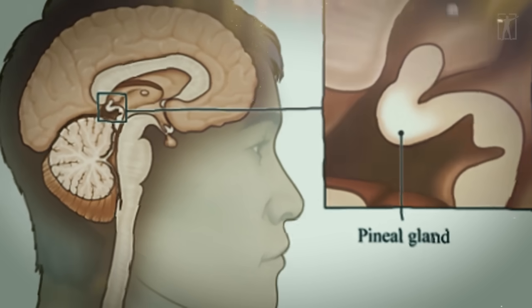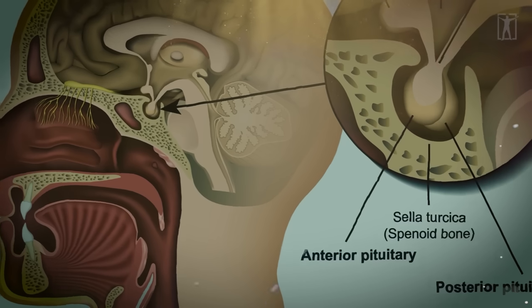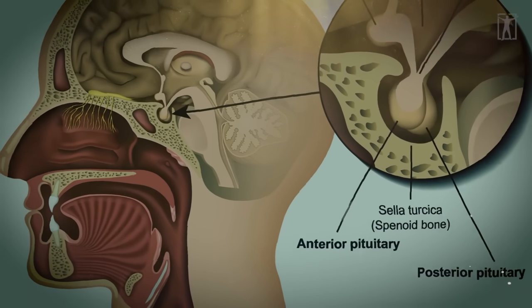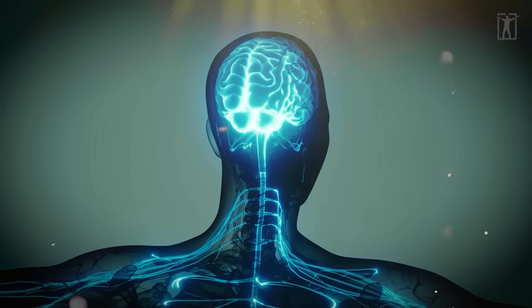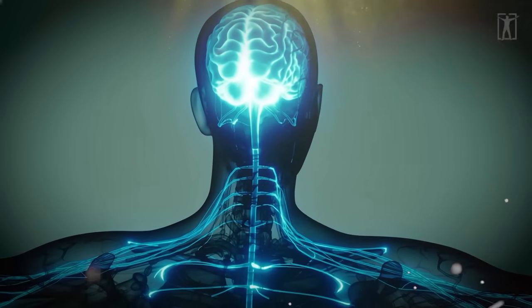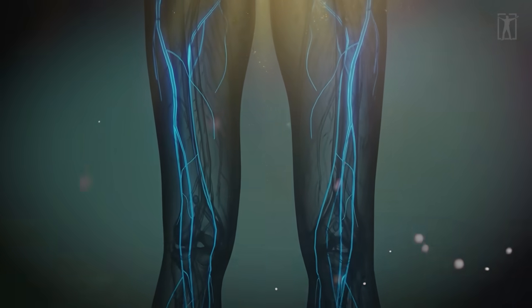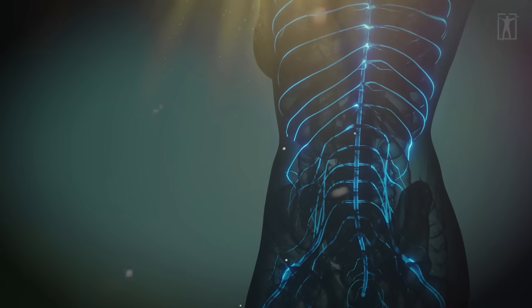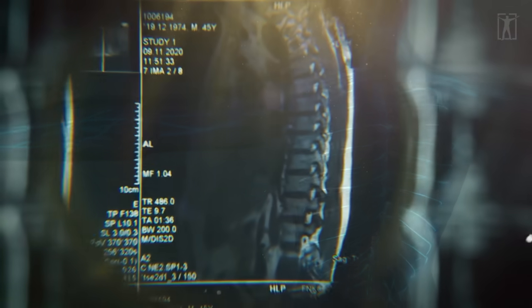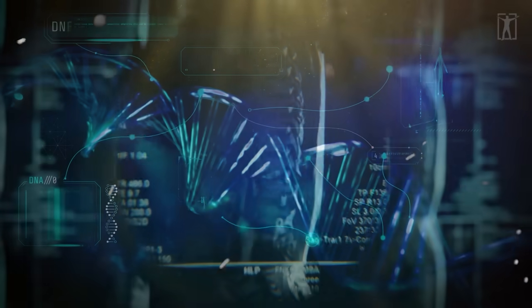The pineal gland is connected to the pingala nerve, while the pituitary gland is connected to the ida nerve, also known as the kundalini and the kunda buffer. These nerves run all the way down the spine and tree of life. These nerves connect to the sacral plexus and sacrum areas of our body's lower vertebrae. They make their way through the spinal column, imitating a DNA strand.